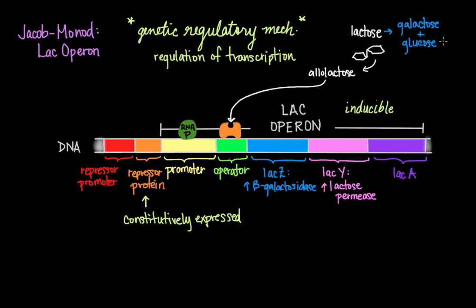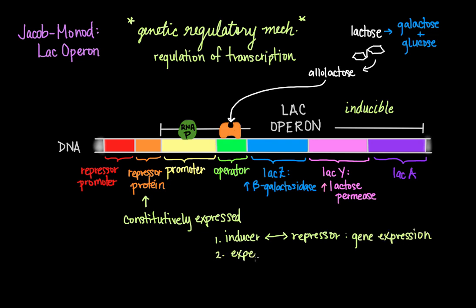There are two key takeaways from the LAC operon model. First, it is the interaction between the inducer and the repressor molecules that mediates gene expression. Second, the cell expends energy to make enzymes only when necessary — there are inducible genes whose transcription is induced only when a particular molecule is present.